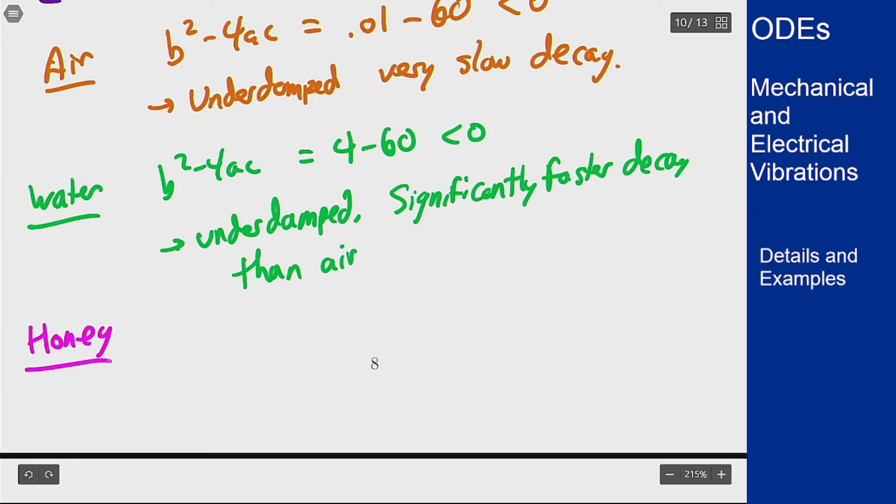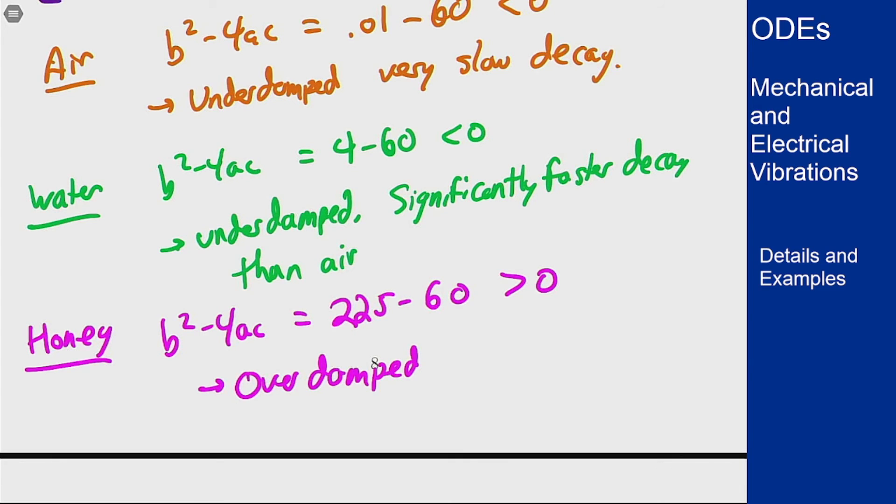And lastly for honey we have a coefficient of 15. So b squared minus 4ac is going to be 225 minus 60 which is very positive, and so this is significantly overdamped, likely at a point of a very slow decay to zero because of how overdamped it is.